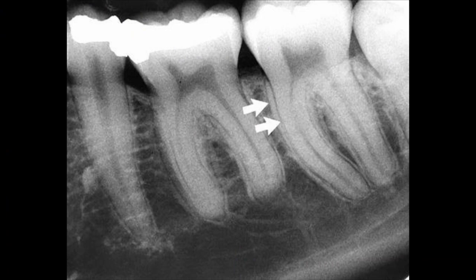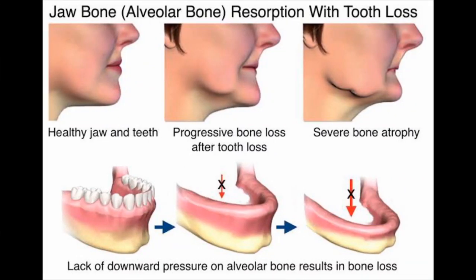On a periapical radiograph, the bone immediately adjacent to and touching the roots of the teeth appears hypermineralized and more radio-opaque. This is known as the lamina dura, and it is a perfectly healthy and normal finding. However, in cases of pathology, the lamina dura disappears — its absence is a significant clinical indicator.